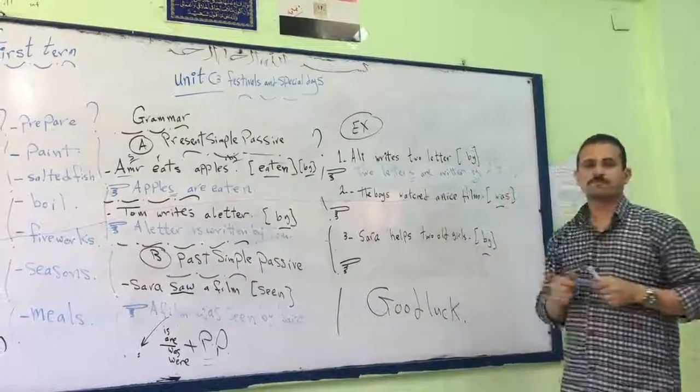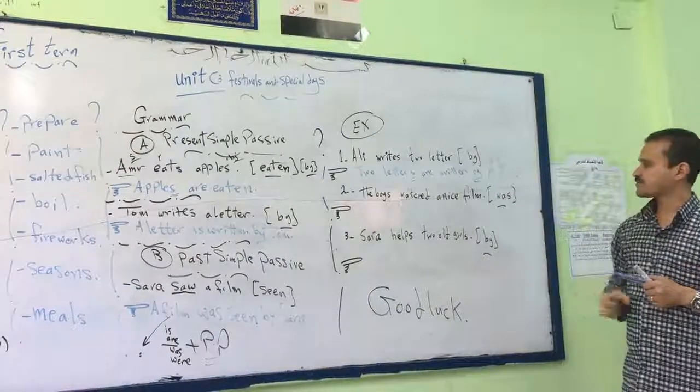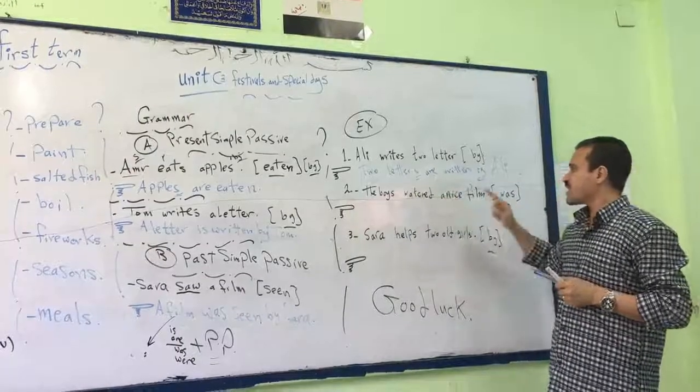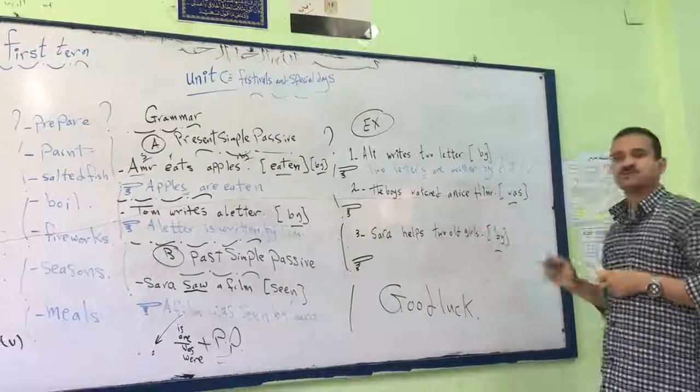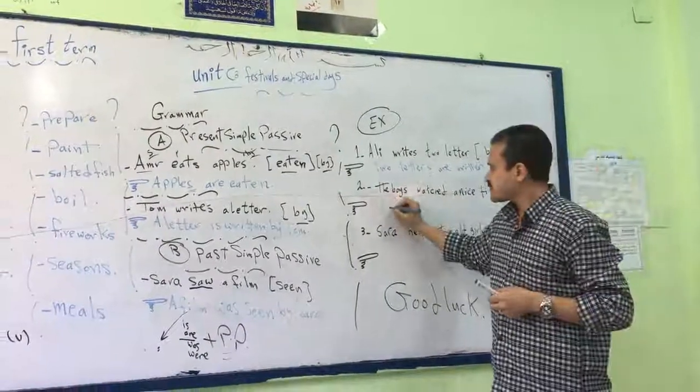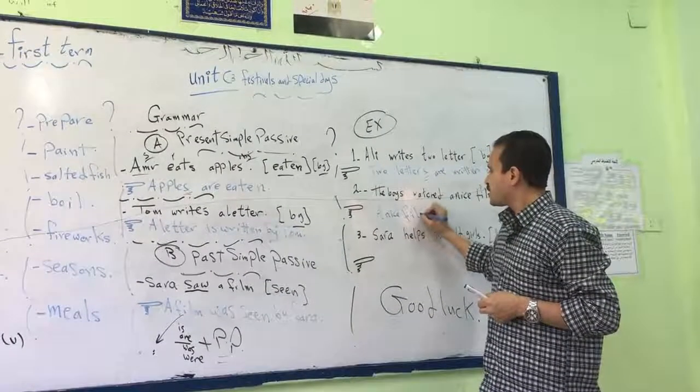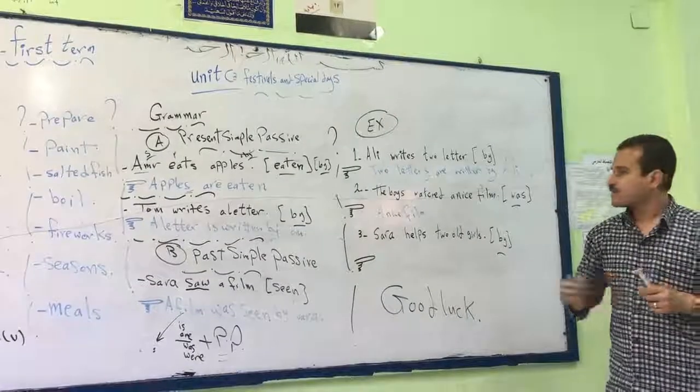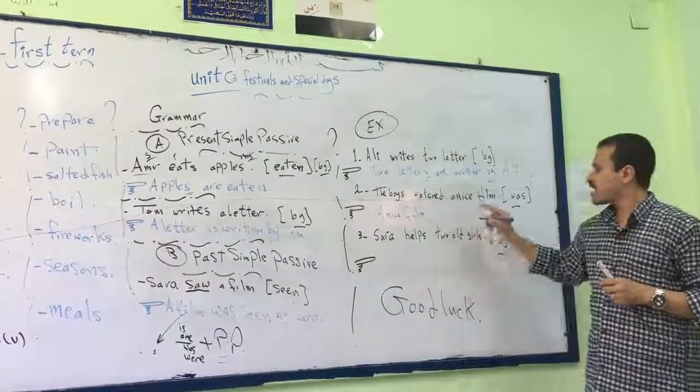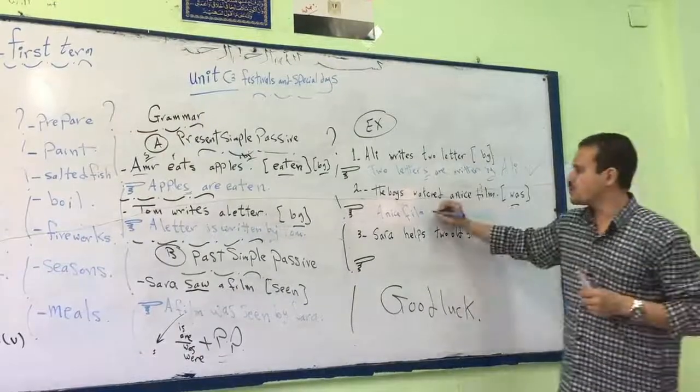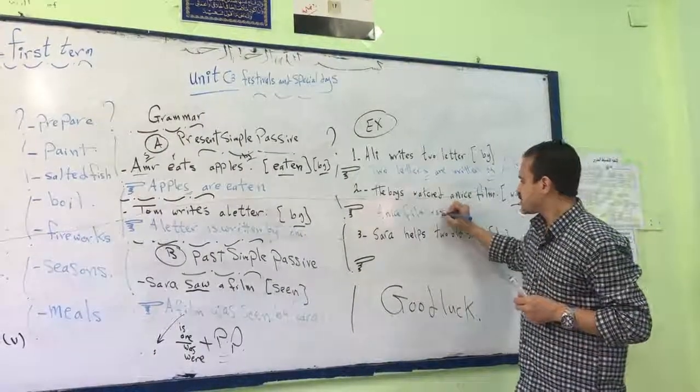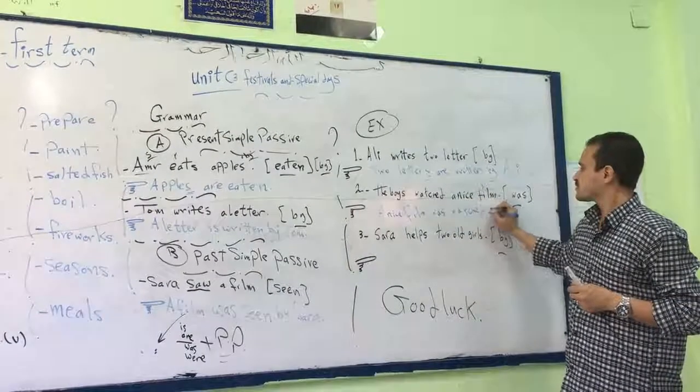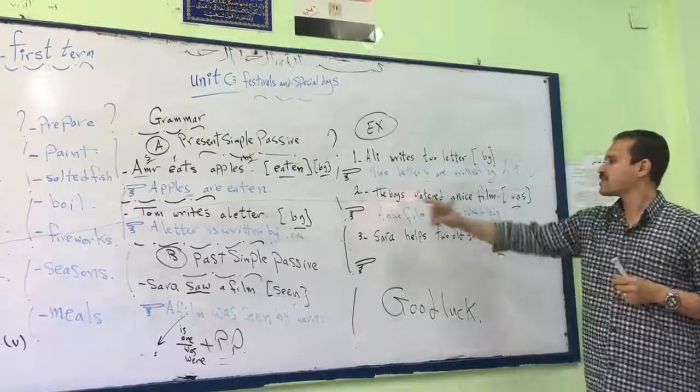Number two: The boy watched a nice film. Use was. Think about it. The boy watched a nice film. Yes, this is the object: a nice film. Was or were? Now we are in the past, and this is singular, so we use was. A nice film was watched by the boy.